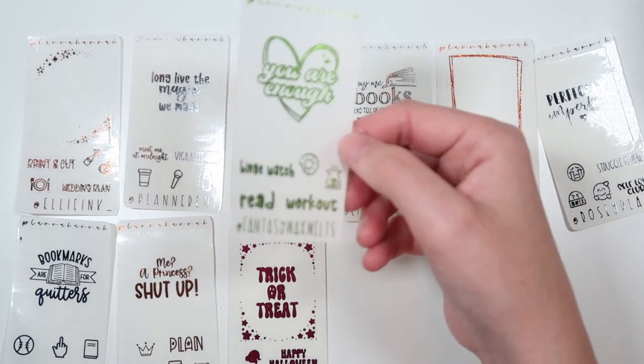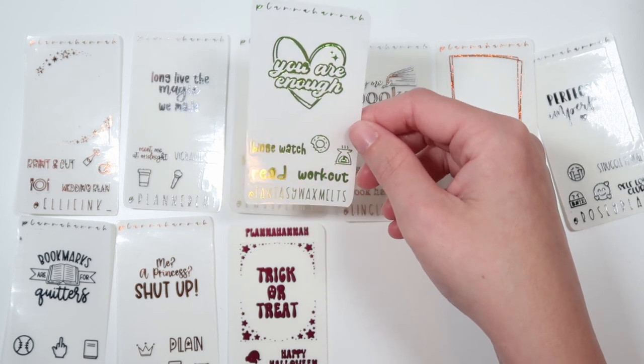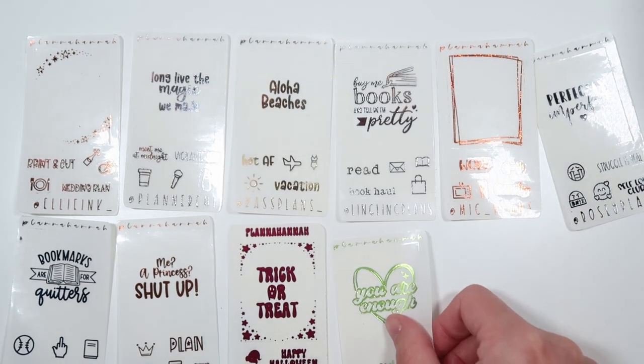We've got Kirsten's freebie being shown in lime. She has a you are enough quote, binge watch, read, and work out. And then we have a donut and a wax melter.